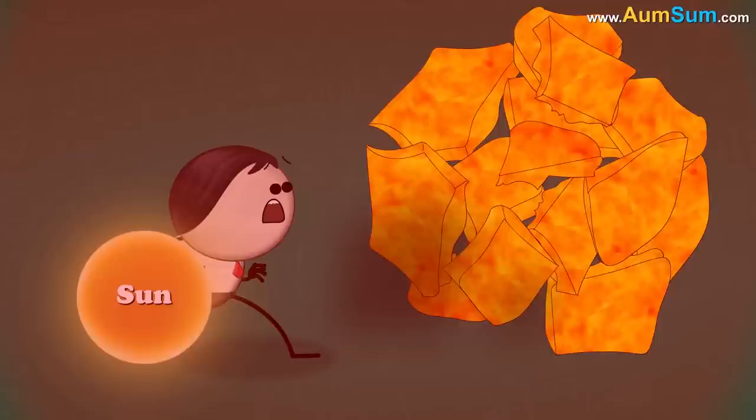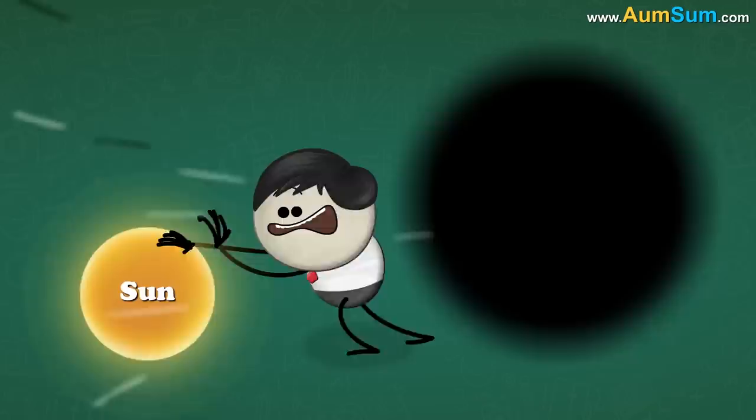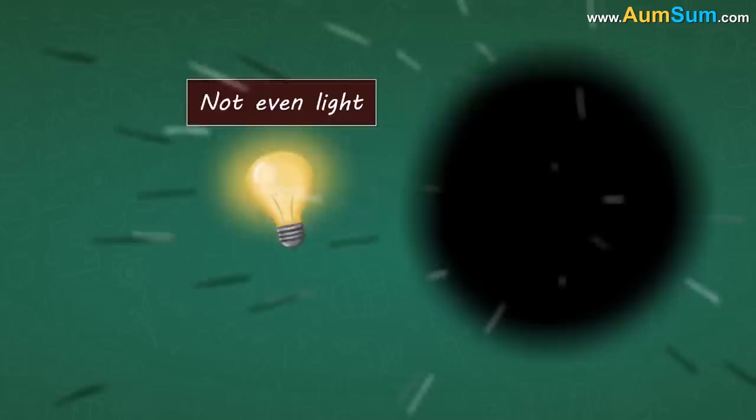The surface or boundary of a black hole is called event horizon. Nothing can escape from within the event horizon of a black hole. Not even light. Hence, the black hole appears black.